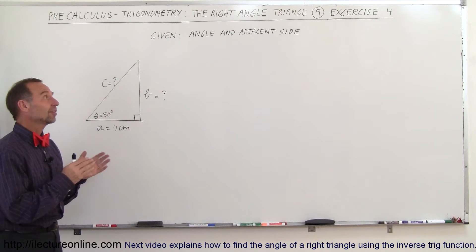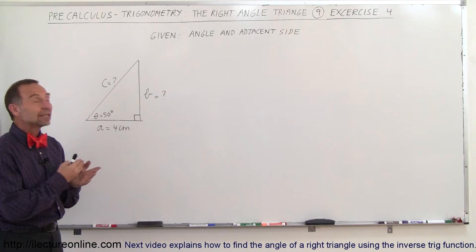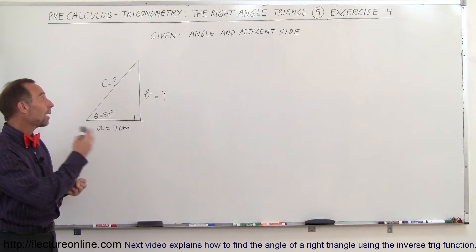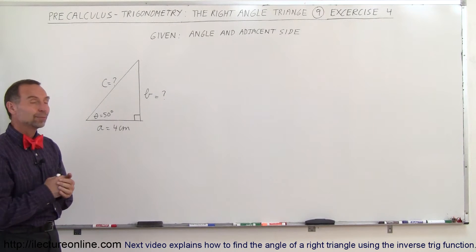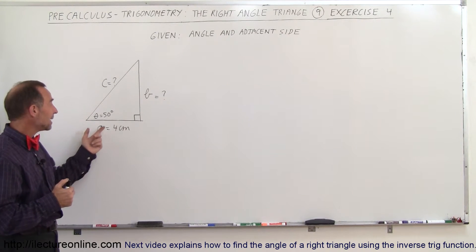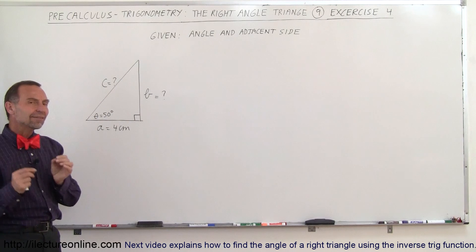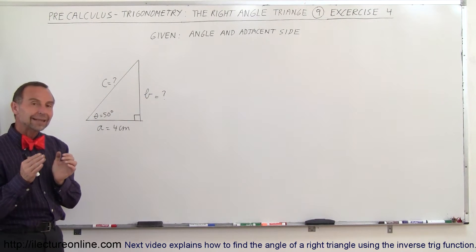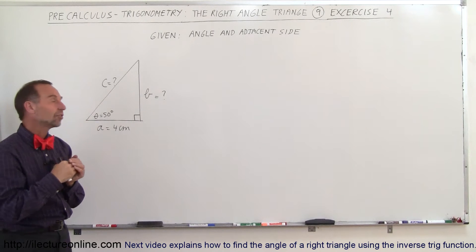Welcome to our lecture online. In this example we were given the angle and the adjacent side and we're supposed to find the opposite side and the hypotenuse. In this case we have the sides labeled A, B and C. Now let's see if we can solve this equation without labeling the hypotenuse, the opposite side and the adjacent side.